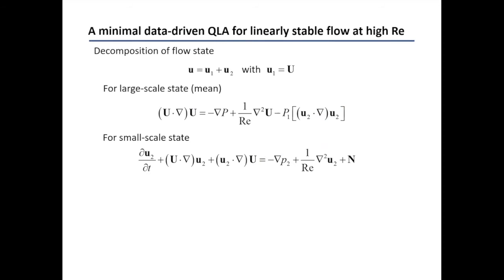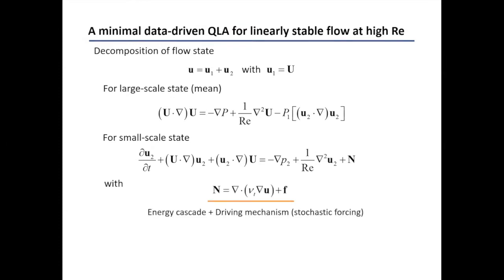The decomposition we use assumes the velocity field is split into mean and fluctuation — the simplest form of decomposition. We write down equations for the mean and the rest. The problem with channel flow is that the small-scale state does not allow any form of linear instability, so if N is assumed to be zero, you only get the trivial solution. Therefore, I use a minimal model — an eddy-viscosity model dealing with the energy cascade and nonlinear turbulent transport — and apply stochastic forcing to generate non-trivial solutions.